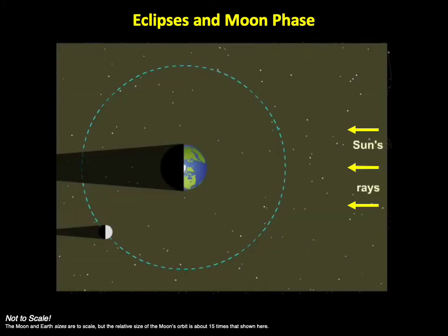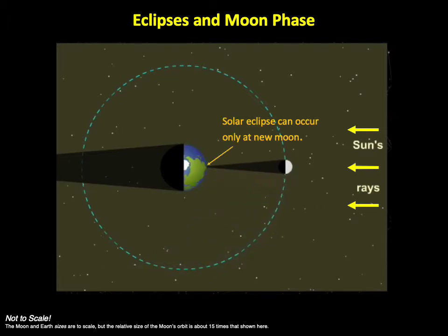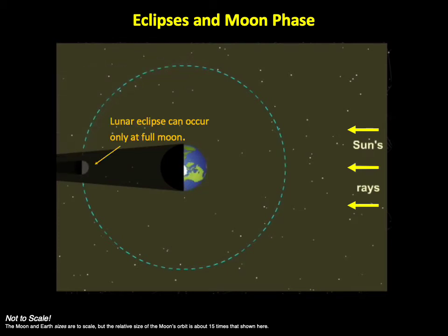We now switch to a view looking down on the Moon's orbit around Earth, showing the full shadows that each world casts into space. Notice that the Moon's shadow can touch Earth only when it is here, at the new Moon position. In other words, a solar eclipse can occur only at new Moon. Resuming the animation, we see that Earth's shadow can fall on the Moon, creating a lunar eclipse, only here, when it is full Moon.